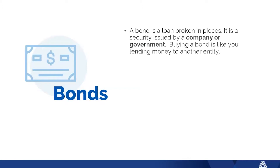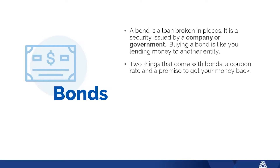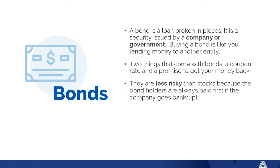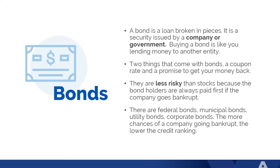Let's talk about bonds. A bond is a loan broken into pieces — a security issued by a company or government. Buying a bond is like lending money to another entity. Two things come with a bond: a coupon rate and a promise to get your money back. Bonds are less risky than stocks because the bondholder always gets paid first if the company goes bankrupt. There are federal bonds, municipal bonds, and utility bonds. The more chances of a company going bankrupt, the lower the credit rating the bond will have.